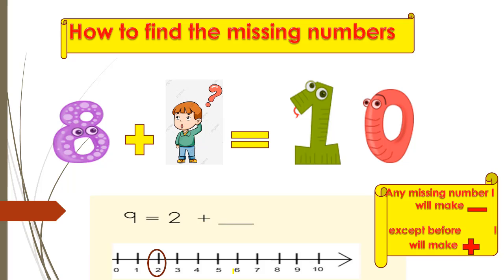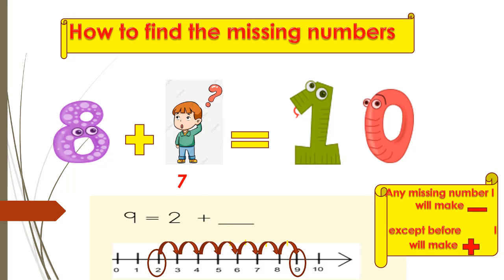Where is the smallest? Two. After two: three, four, five, six, seven, eight, nine. How many steps? One, two, three, four, five, six, seven — it's seven!